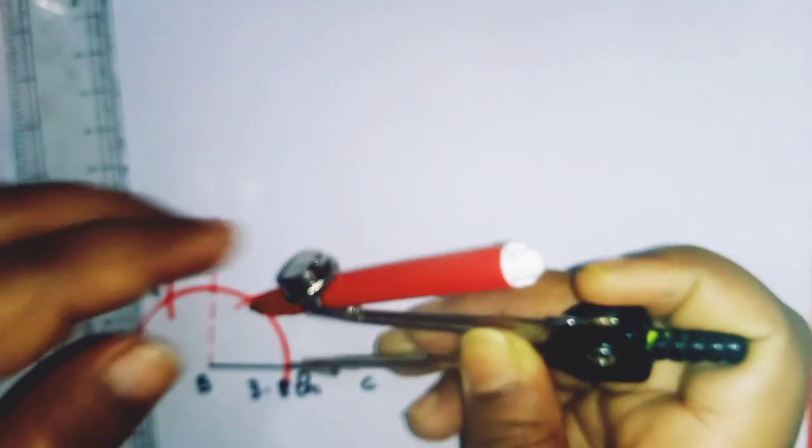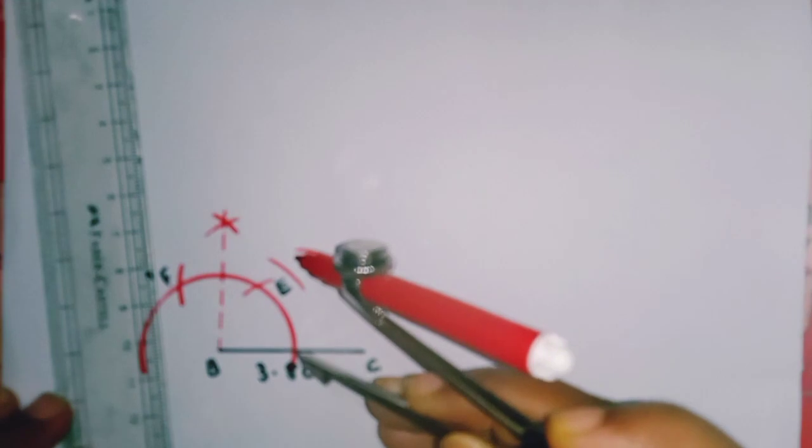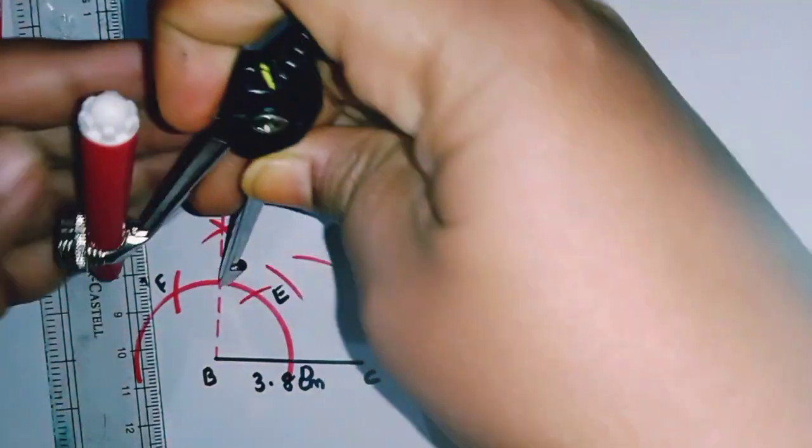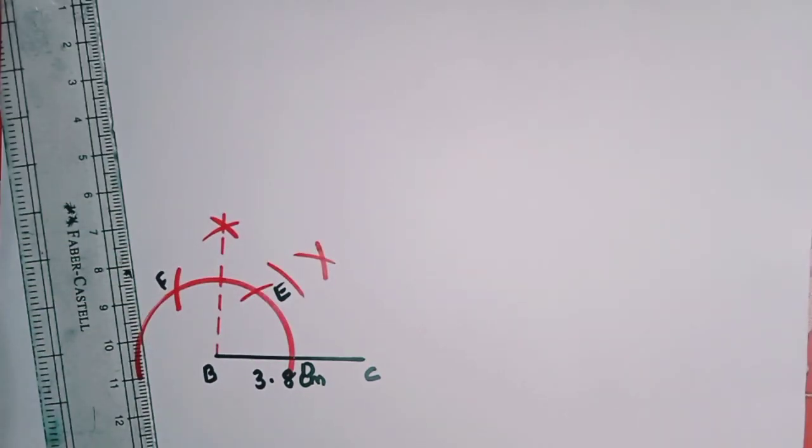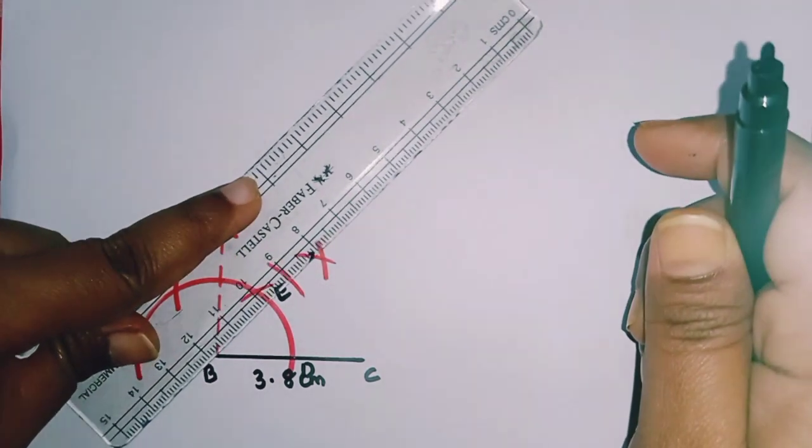So now you need to bisect this 90 degrees. Take out your compass and measure from this arc to this arc. You can name it - naming will give you a better idea. This one you can name as D, E, and F. Now measure from D to this 90 degree ray, draw an arc from here and another arc here. This will be 45 degrees. Now you can join this.